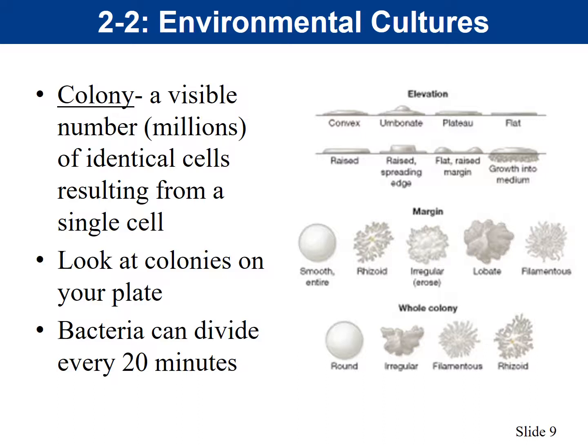You also want to look at the margins — what do the edges of the colonies look like? Some colonies are smooth and entire, meaning the edge is completely smooth. Some are rhizoid, looking like little filaments or fungi growing out from the culture. Some are irregular, lobate, or filamentous. Different types of bacteria have different margins. You also want to look at the whole colony form — is it round, irregular, filamentous, rhizoid, etc.?